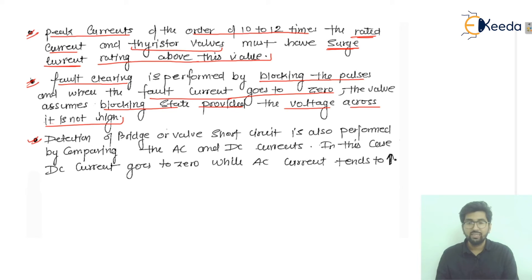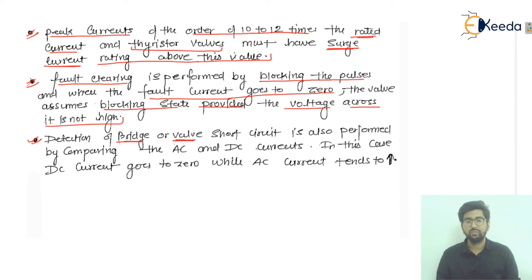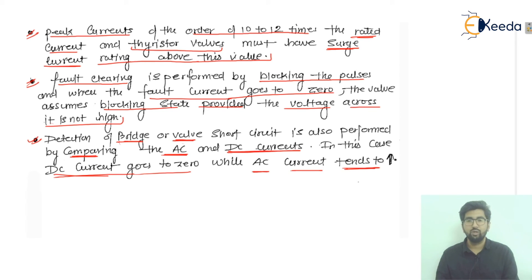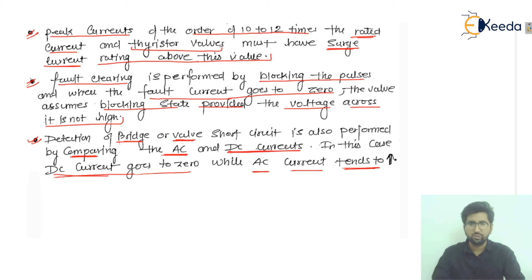Detection of a bridge or valve short circuit is performed by comparing the AC and DC currents. If there is a short circuit in the bridge or any of the valves, it is detected by comparing AC and DC currents. When this occurs, the DC current goes to zero while the AC current tends to increase. That is all about short circuit in a bridge.